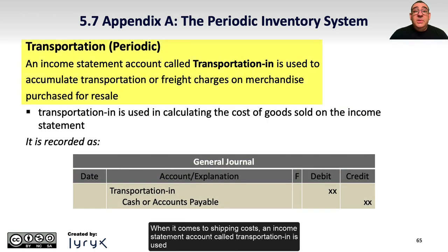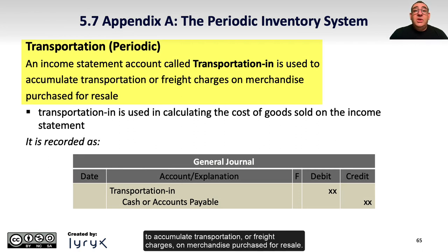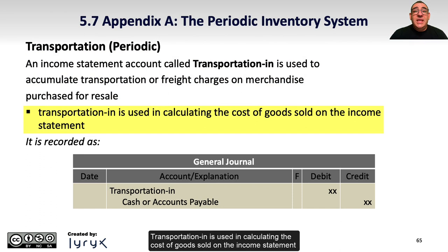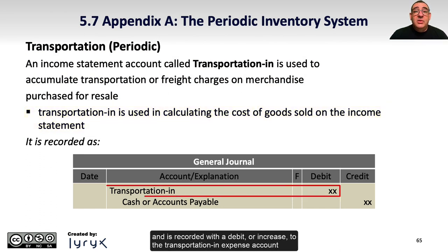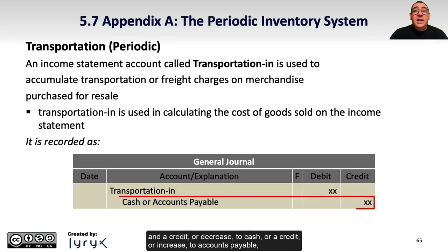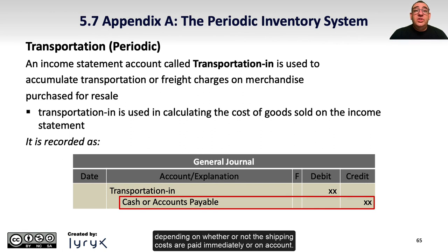When it comes to shipping costs, an income statement account called transportation in is used to accumulate transportation or freight charges on merchandise purchased for resale. Transportation in is recorded with a debit or increase to the transportation in expense account, and a credit or decrease to cash, or a credit or increase to accounts payable depending on whether the shipping costs are paid immediately or on account.